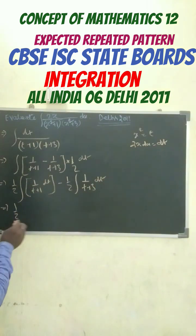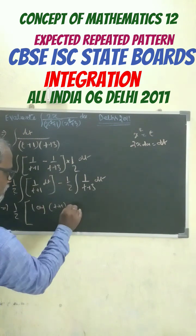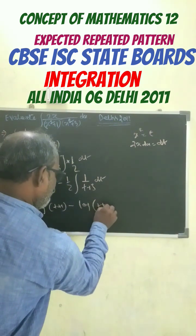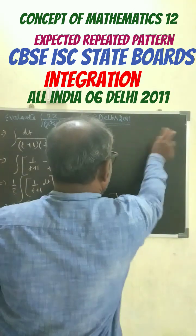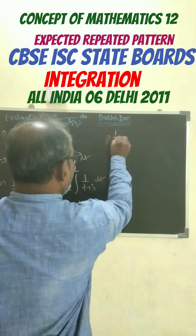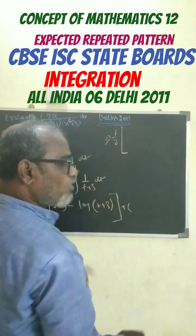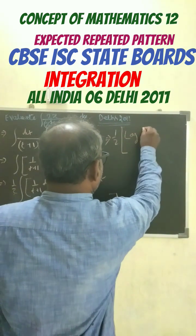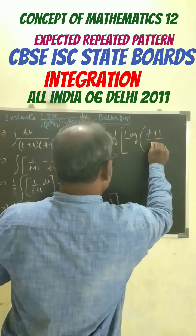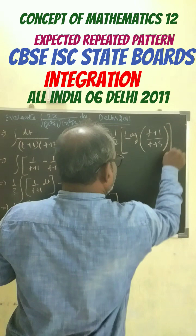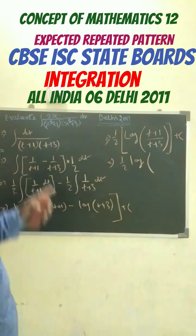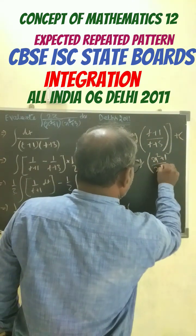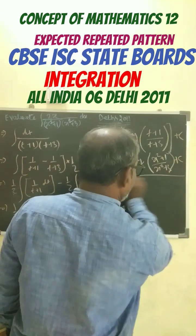This can be written as half — half is common. We get here log(t plus 1) minus log(t plus 3) plus constant. So further putting in the value of t, and using log a minus log b equals log(a/b), we write here half log((t plus 1) by (t plus 3)) plus constant, which is the required answer.